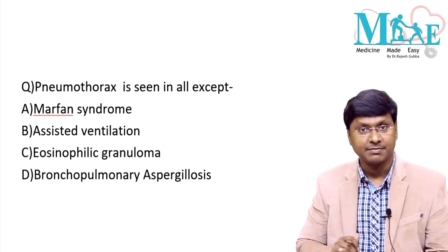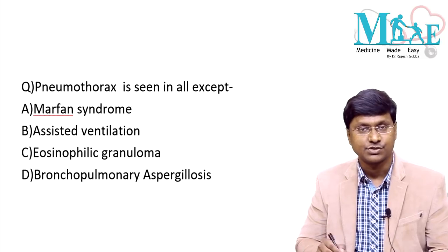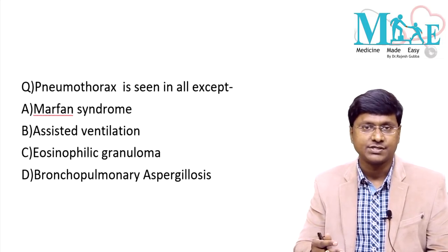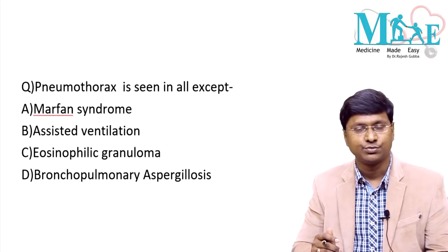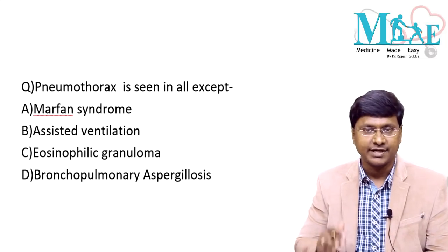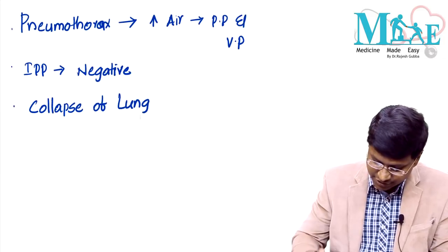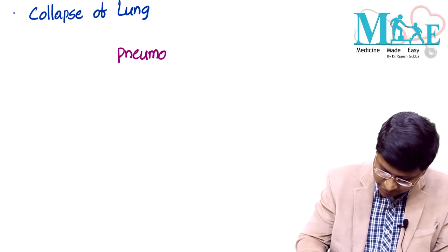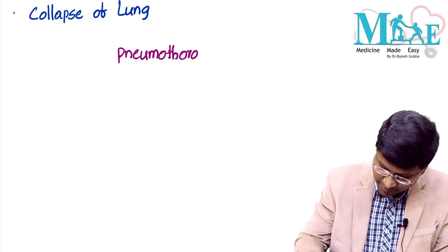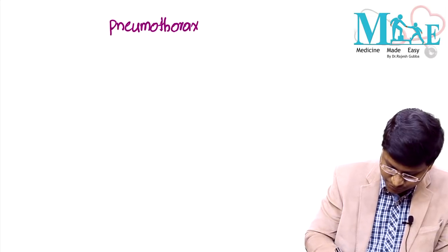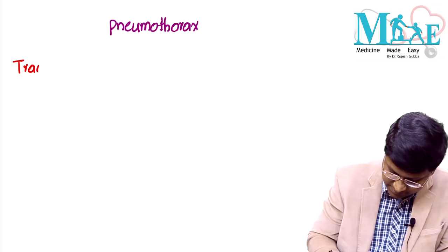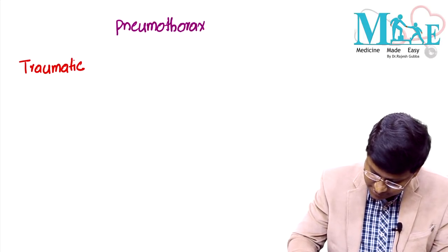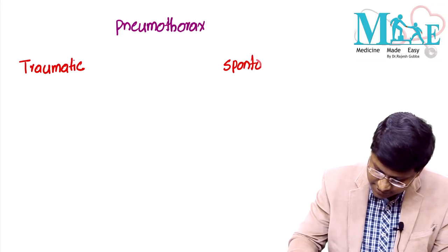We can classify the etiology of pneumothorax into two types: traumatic pneumothorax and spontaneous pneumothorax. The question posed is: pneumothorax is seen in all except — Marfan syndrome, assisted ventilation, eosinophilic granuloma, and bronchopulmonary aspergillosis. We will return to this after covering the etiologies.